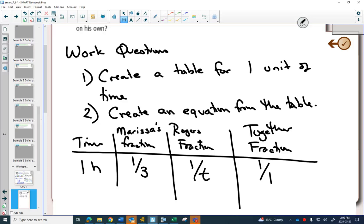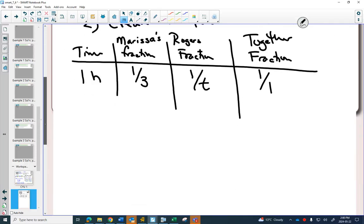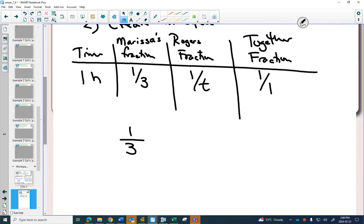Now we're going to create an equation. What they would do separately in the hour has to equal what they do together in the hour. So our equation, one third, that's the amount Marissa gets done. Does it make sense that Roger has to get two thirds of it done in order to get it all finished in the hour? Well, we don't know what his time is. So we do one over T equals one.